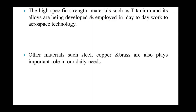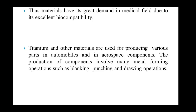High specific strength materials such as titanium alloy are developed day by day for various purposes. Other materials used nowadays in metal forming include copper and brass, which have high formability. Materials like titanium alloy are in high demand in the medical field because they are biocompatible — meaning they can be put inside the human body. So when a bone needs to be replaced, we generally use titanium alloy. Titanium and other materials are used for different parts production, and these parts are prepared by different processes such as blanking, piercing, and others.